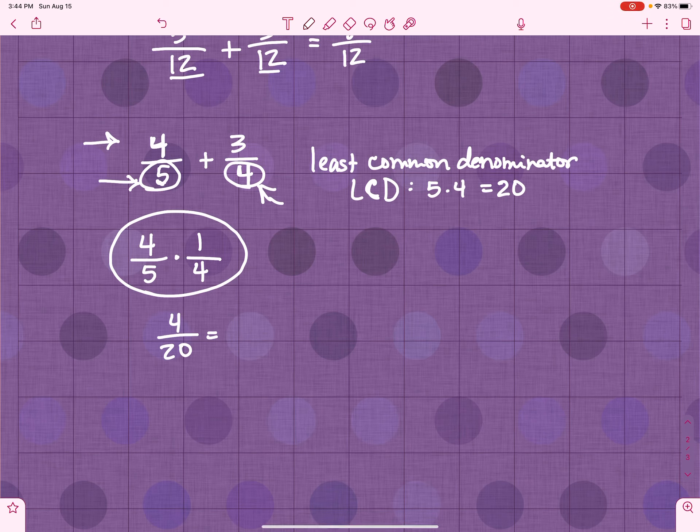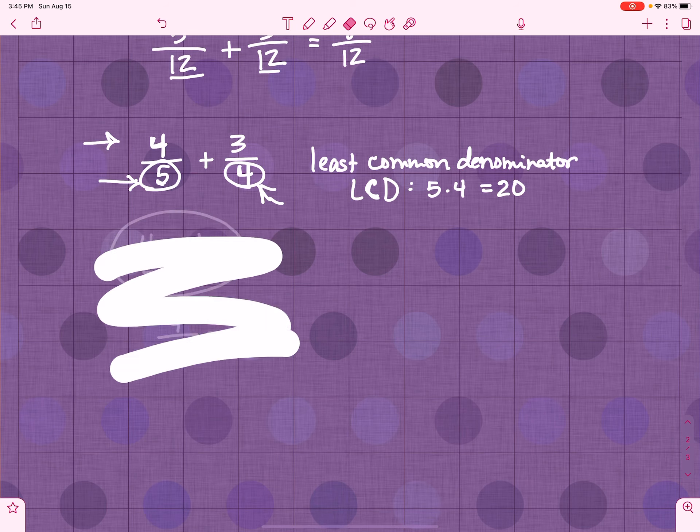Because when I reduce this, I get 1 fifth. That is not the same as 4 fifths. So, something has gone horribly wrong. Let's look at this.